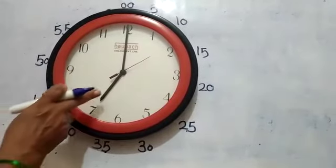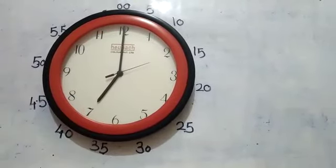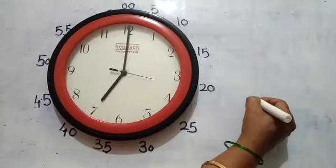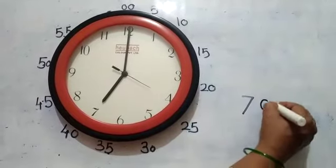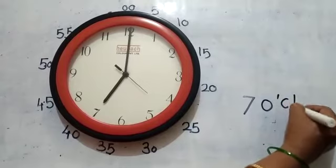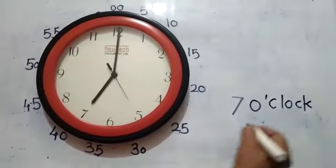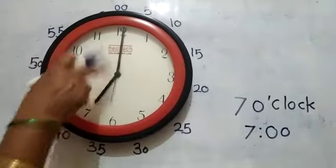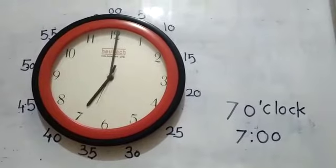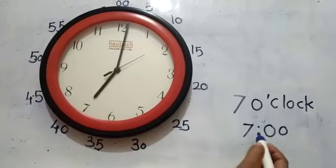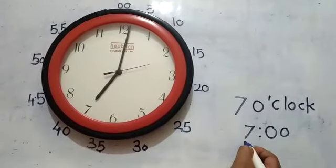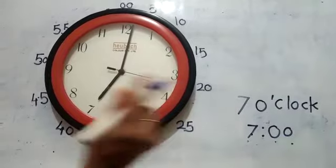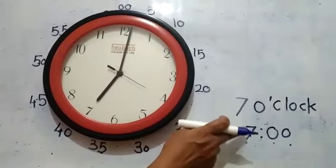Look children. Here the hour hand is on 7 and the minute hand is on 12. So we can say it is 7 o'clock — or 7:00. These two dots separate the hour and the minutes. This is 7 hours and 00 minutes, means this is the time of 7 o'clock.